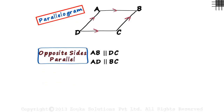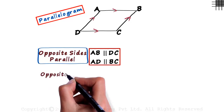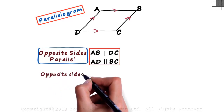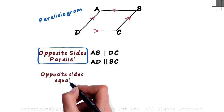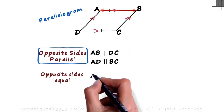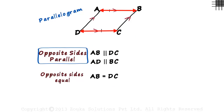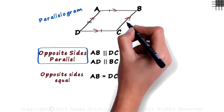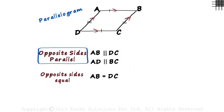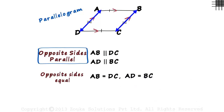In a parallelogram, the opposite sides are also equal. This side will be equal to this side — we can say that AB is equal to DC. And this side will be equal to this side — AD is equal to BC.